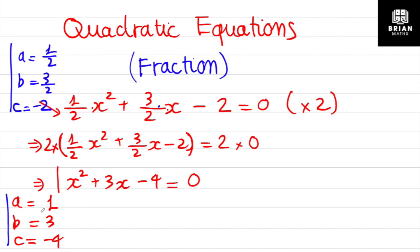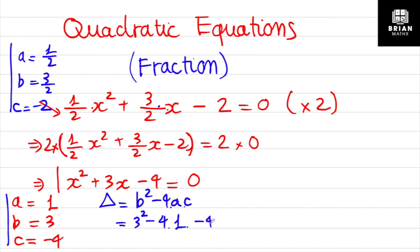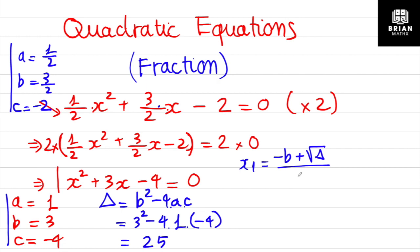With the simplified coefficients it is very easy to find the discriminant. The discriminant equals b² minus 4ac. Substituting, we get 3² minus 4 times 1 times (negative 4). The result for the discriminant is 25.